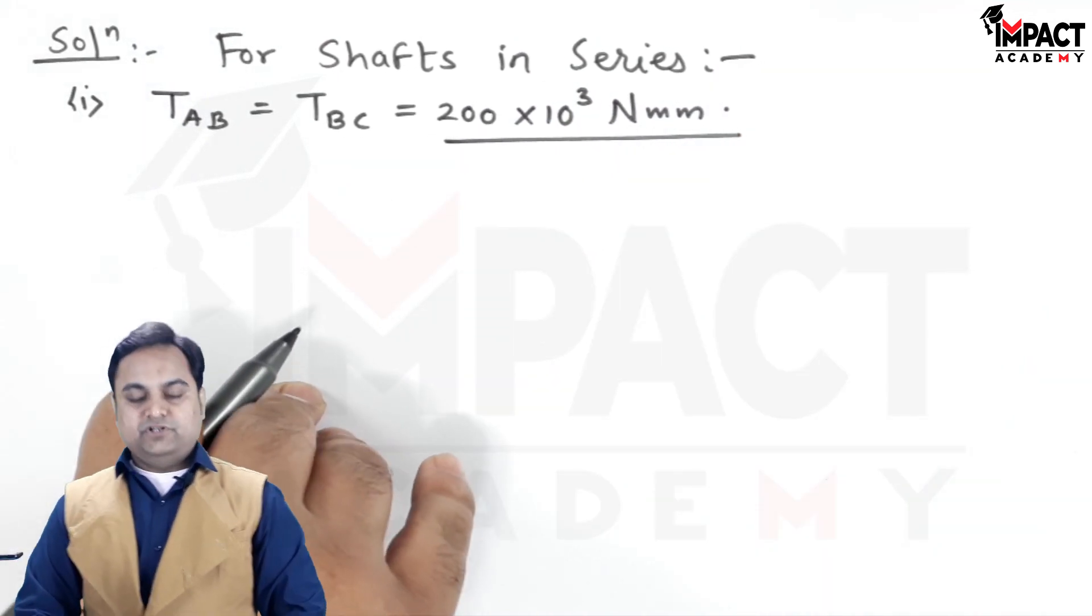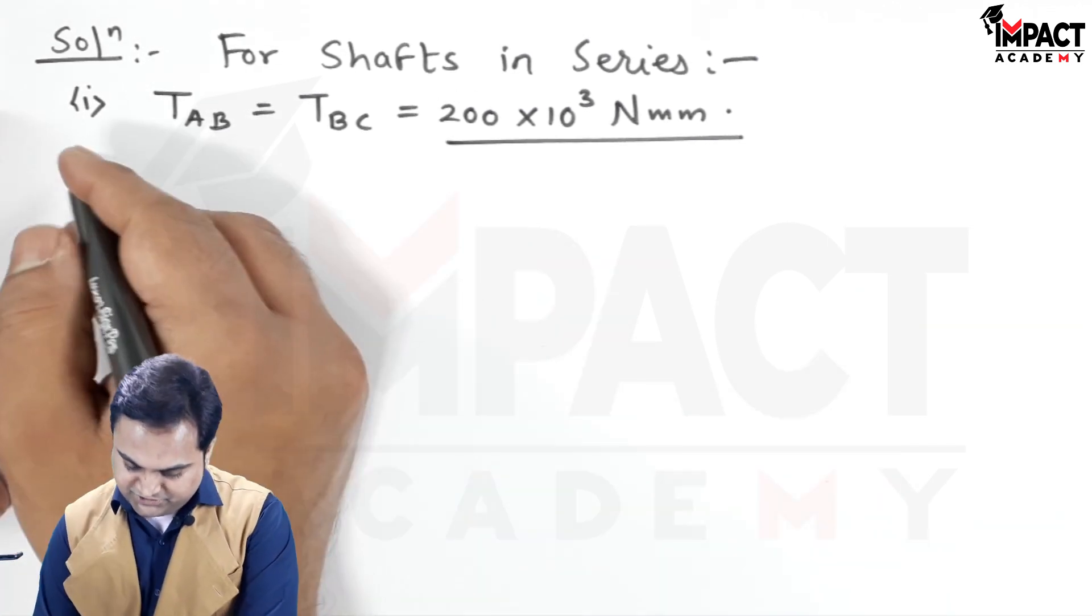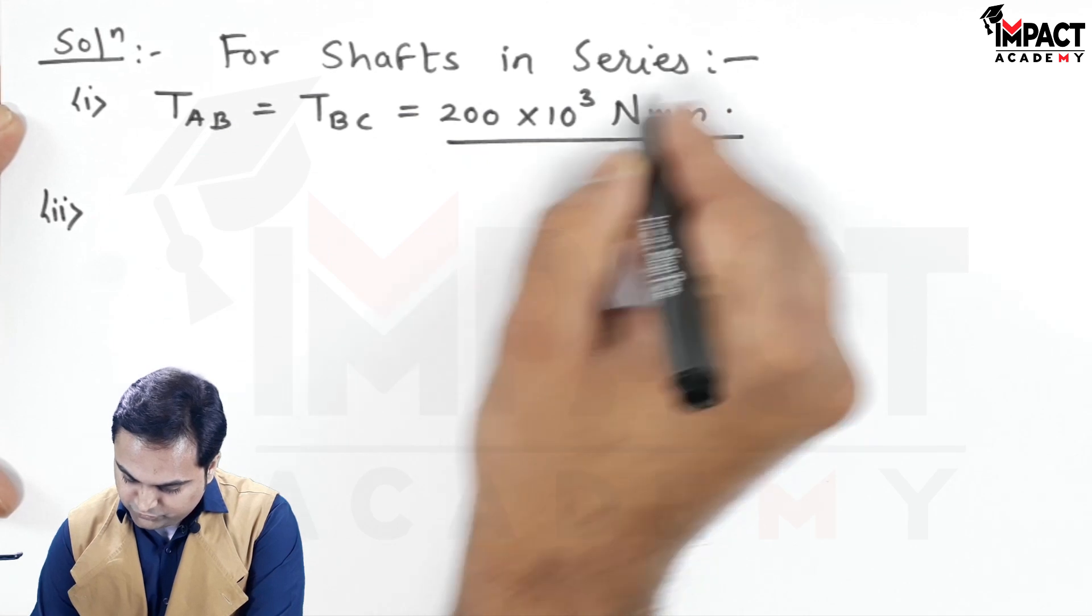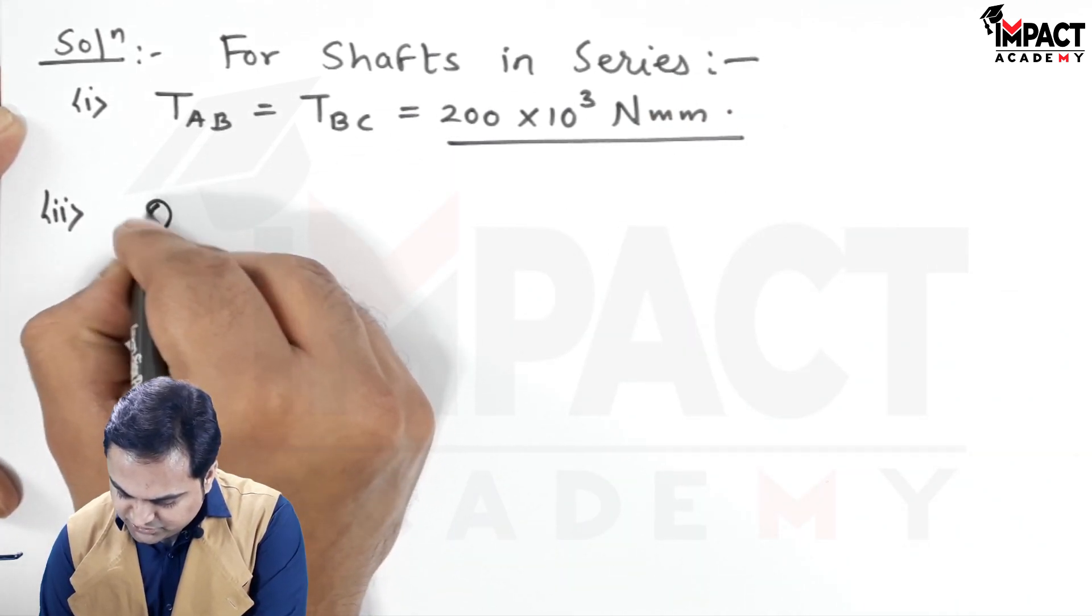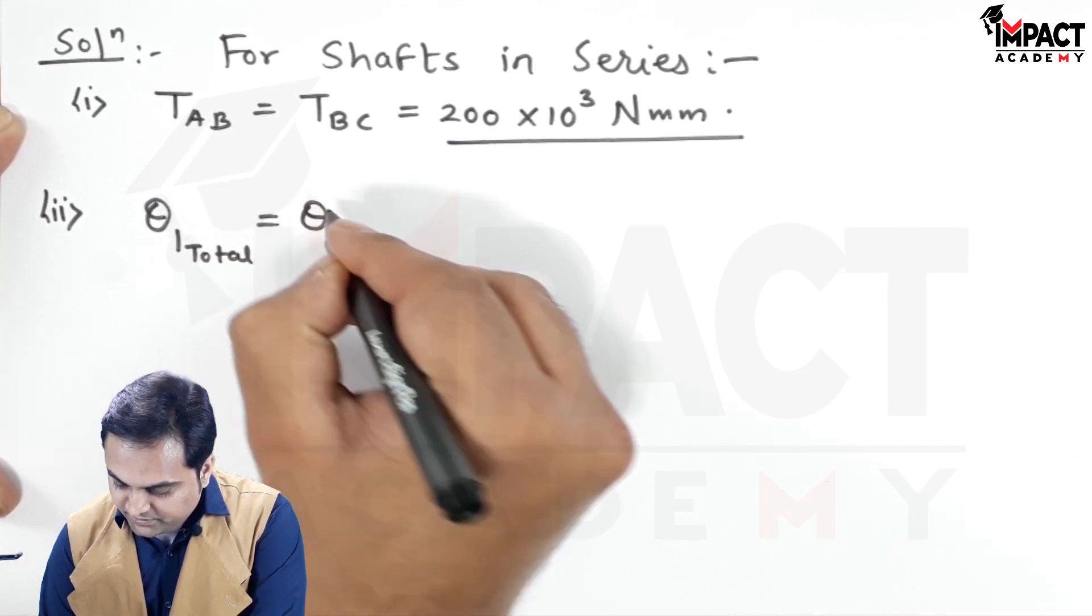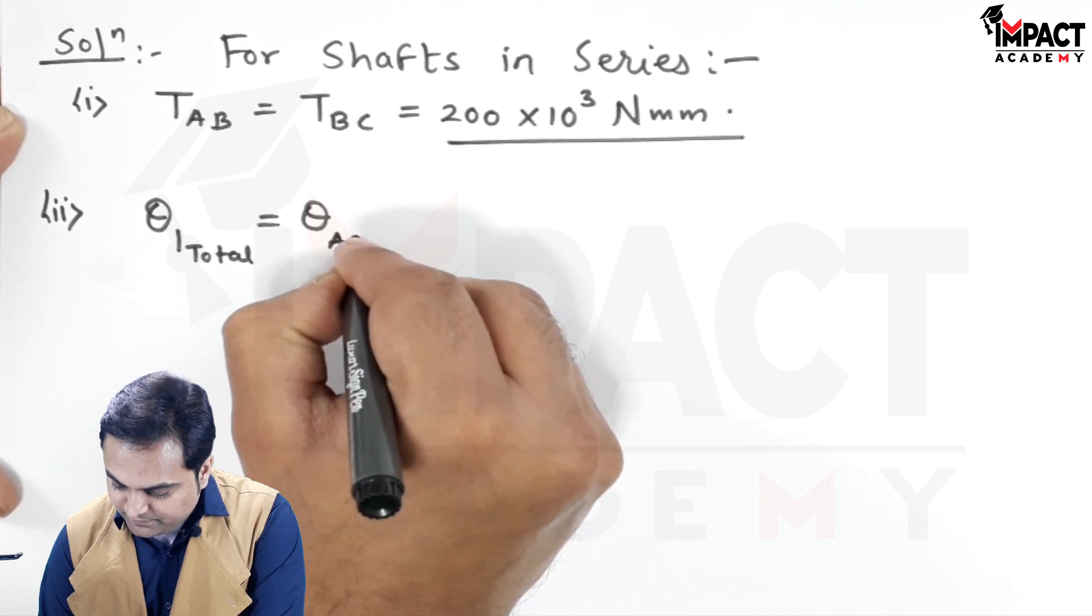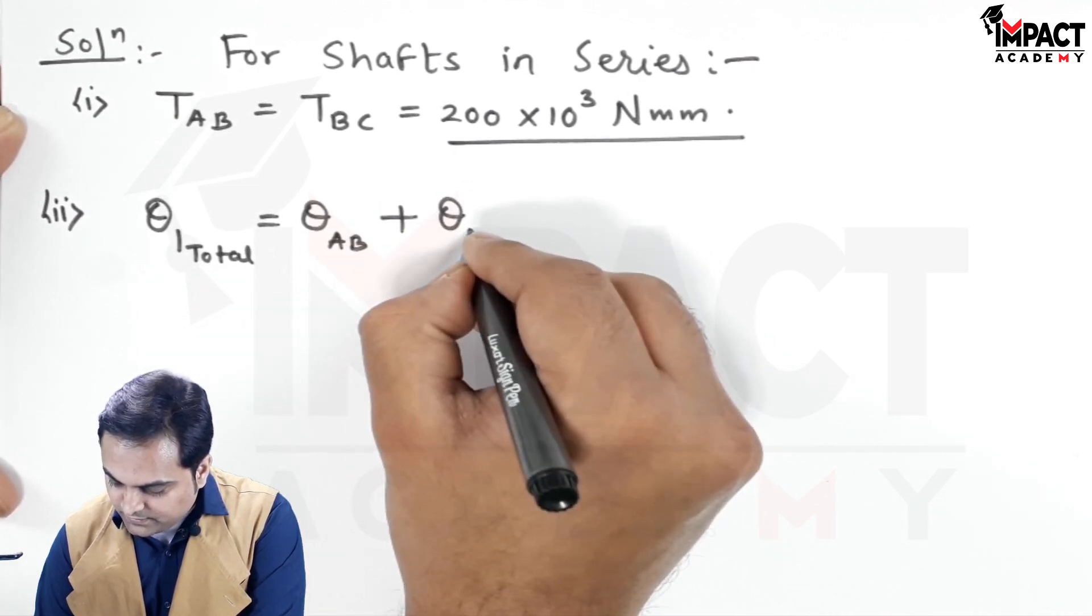From the first condition, we get the torque value. The second condition is: for shafts in series, the total angle of twist θ_total is given by θ_AB + θ_BC.